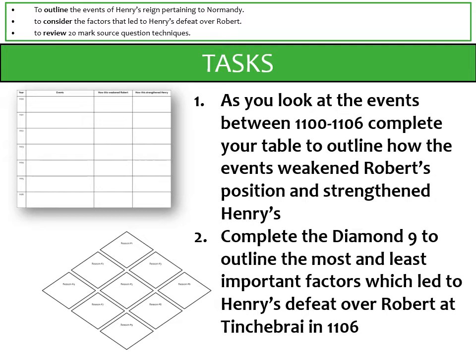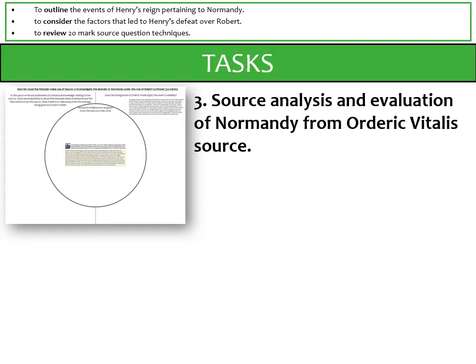You need to decide whether it was the battle itself or whether the seeds had been sown years prior by Henry and Robert, meaning that by 1106 Henry was destined to win. The final task is a source analysis and evaluation from a record by Orderic Vitalis of the situation in Normandy around 1104 — annotate it, consider context from today's lesson, and look at Orderic Vitalis's background to assess credibility. Send me a photograph or document as a record.